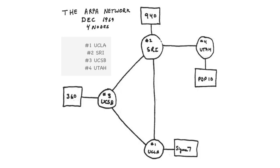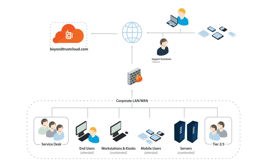The story of the Internet begins in the 1960s during the Cold War era. The United States Department of Defense initiated a project called ARPANET, Advanced Research Projects Agency Network, to create a decentralized communication network that could withstand a nuclear attack. This network would later become the foundation of the Internet we know today.